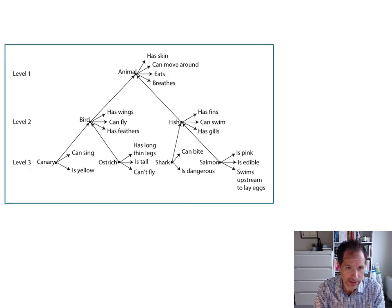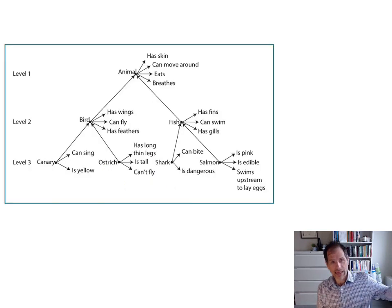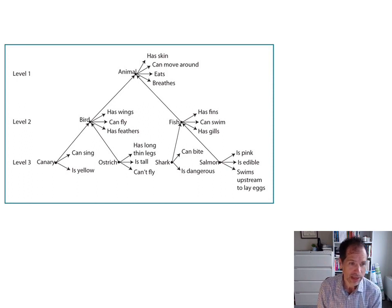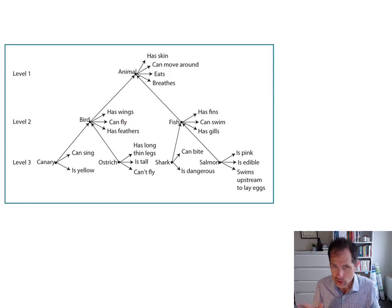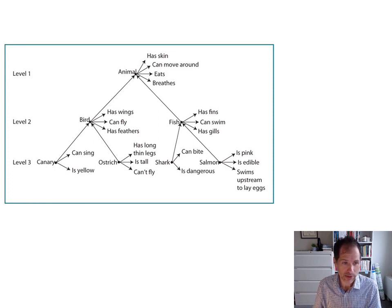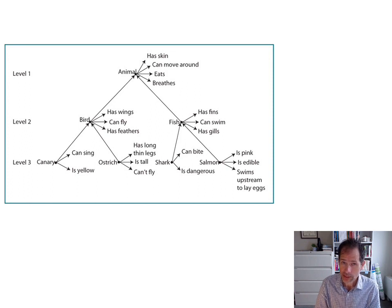And this is what the hierarchy looks like. There are nodes and there are connections. So here we can see our canary there on level three. Canaries sing and they're yellow. So canaries have three things on this hierarchical network: they can sing, they're yellow, and they're also birds. So all three of those are properties of canary. Two of them are things that the canary has, and one of them is something that the canary is.